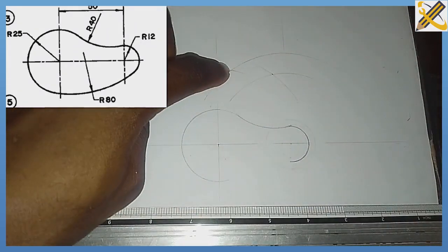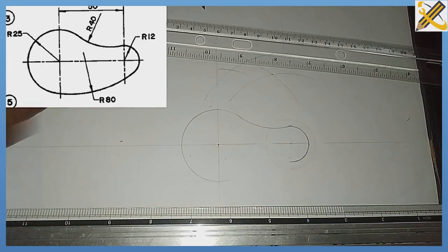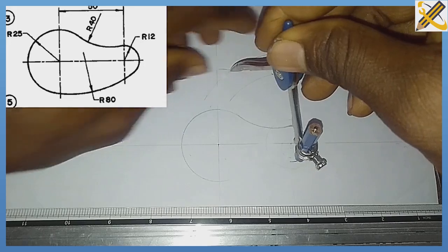This is the point of intersection. Pick your compass and measure 80 on your ruler. Then you draw your tangential curve.